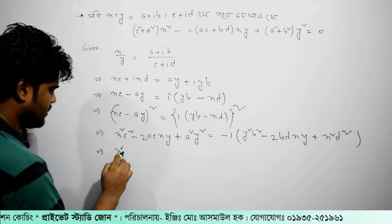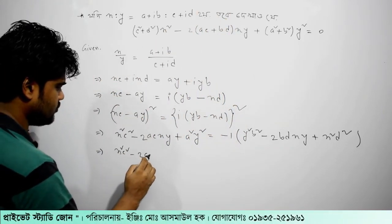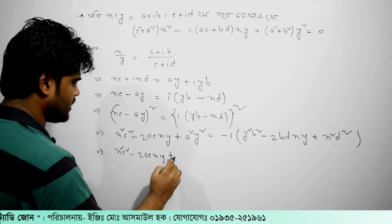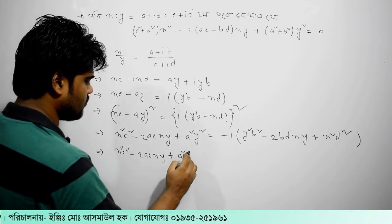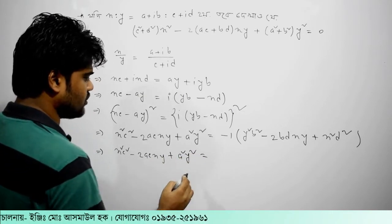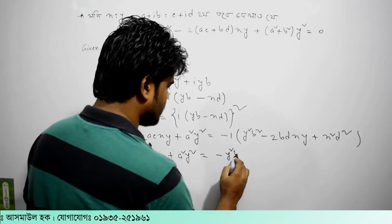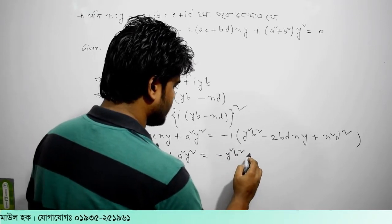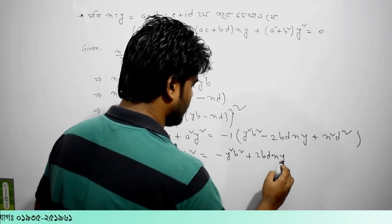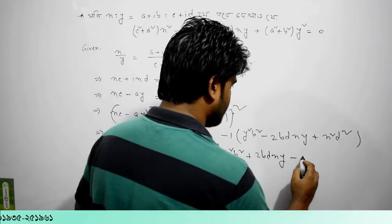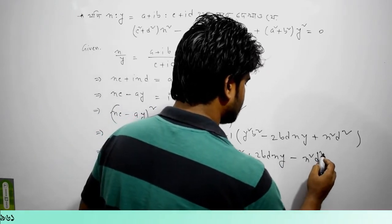x square c square minus 2ac xy plus a square y square equal to minus y square b square plus 2bd xy minus x square d square.